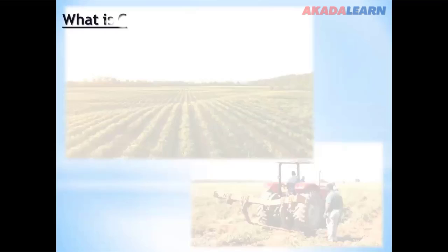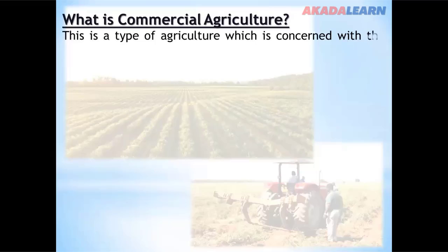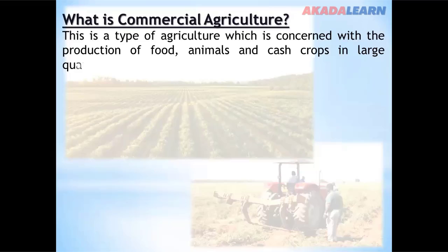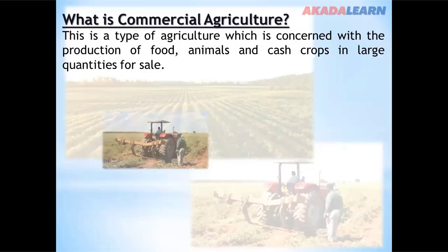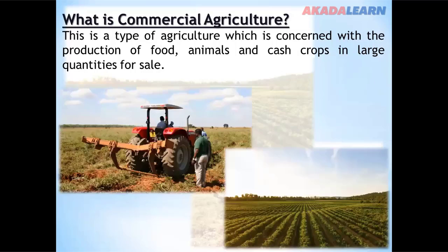What is commercial agriculture? Commercial agriculture is a type of agriculture which is concerned with the production of food, animals, and cash crops in large quantities for sale. What are the characteristics of commercial agriculture?